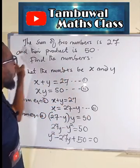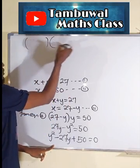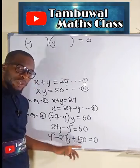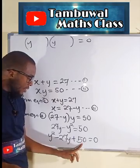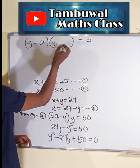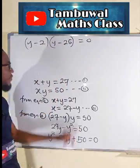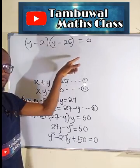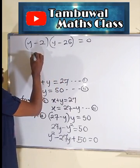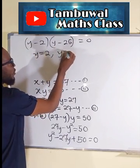By factorization, we think of two numbers: when multiplied together we get positive 50, and when added together we get negative 27. The numbers are negative 2 and negative 25, because negative times negative is positive, 2 times 25 is 50, and negative 2 minus 25 is minus 27. Setting each factor equal to 0, the first factor gives y equals 2, and the other gives y equals 25.